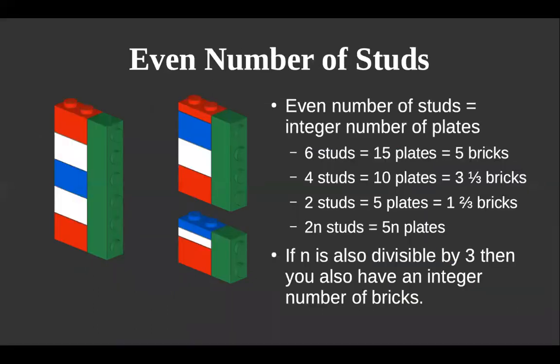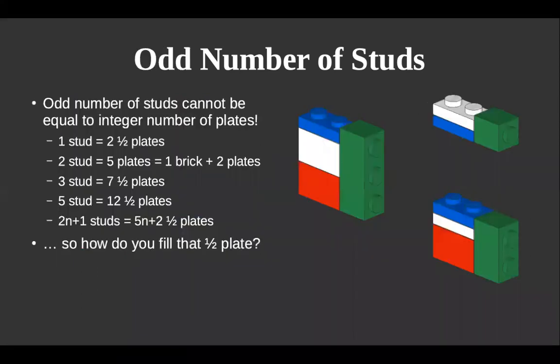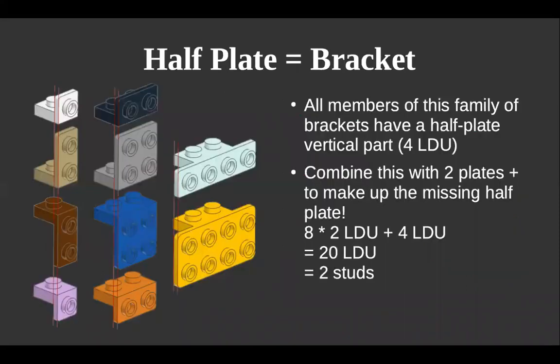This works great if you have an even number of studs. Six studs equals five bricks; four studs equals three bricks on a plate; two studs is a brick and two plates. But what if you have an odd number of studs? Three studs gives you two bricks, a plate, and a little more. One stud is equivalent to two plates and a little more — and that 'little more' is half a plate.